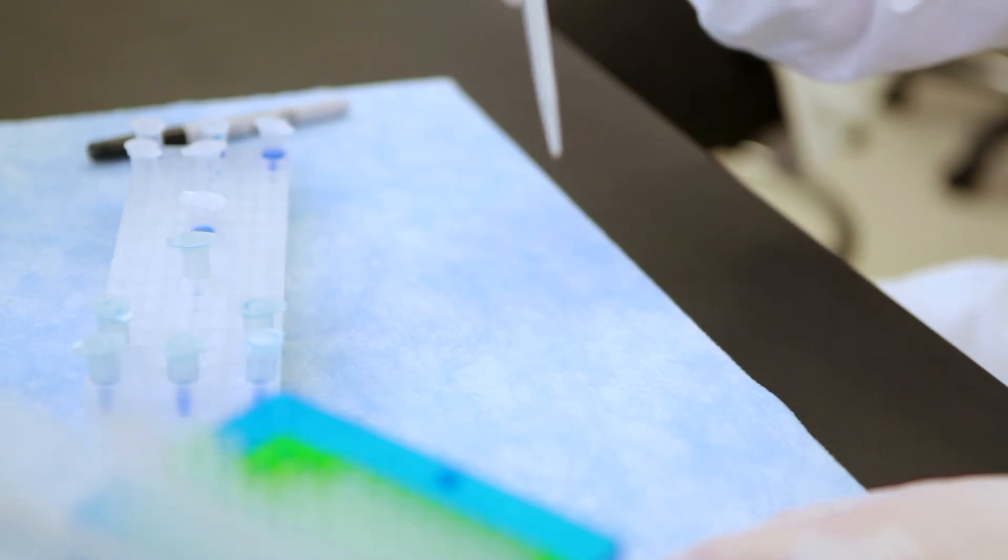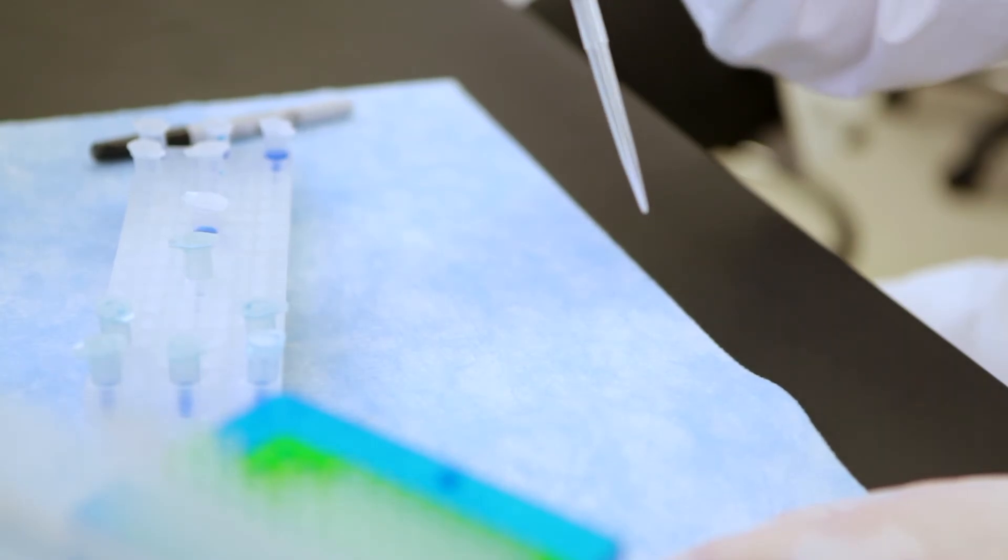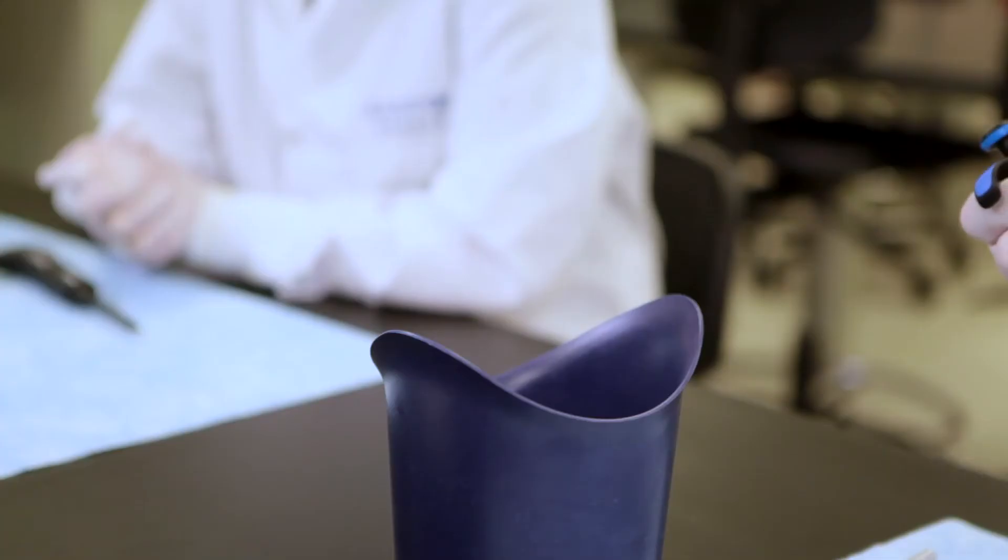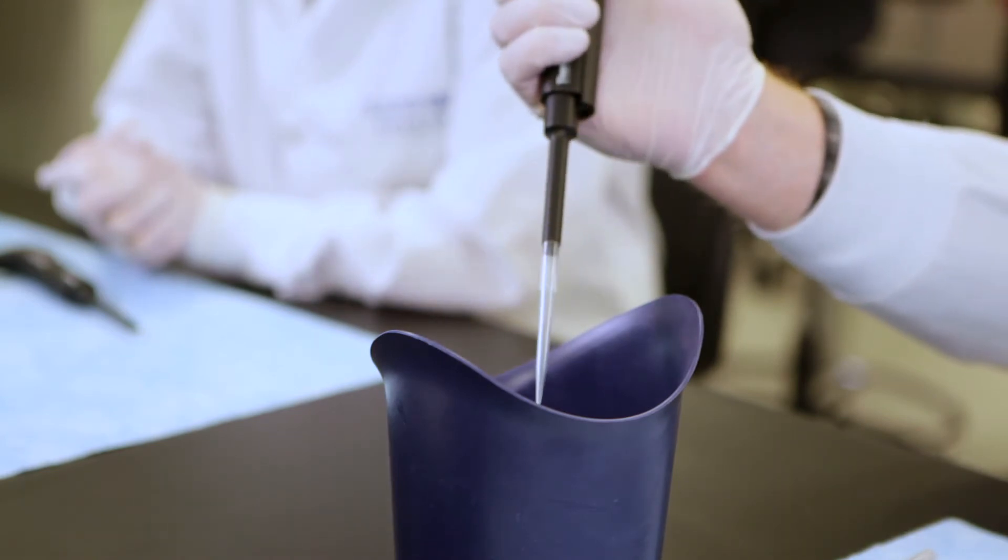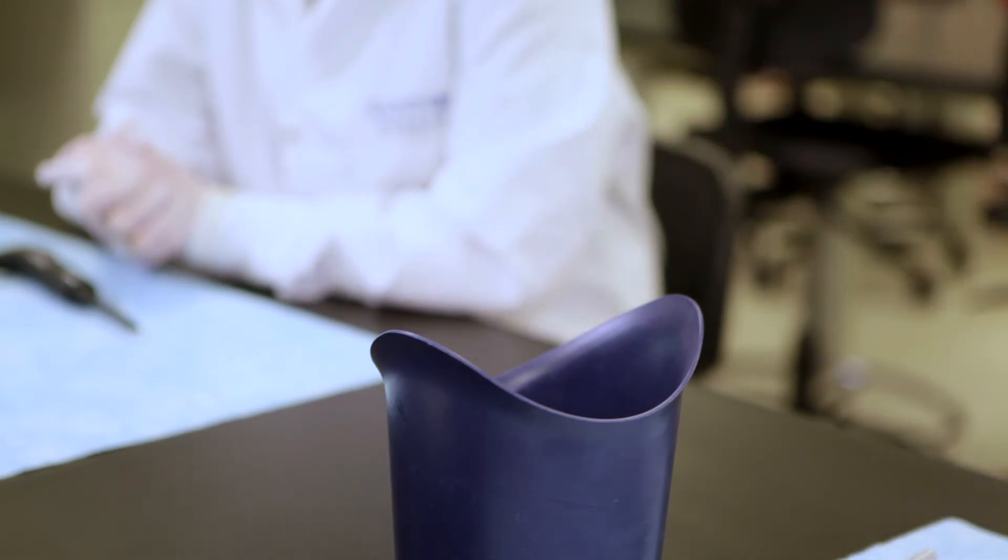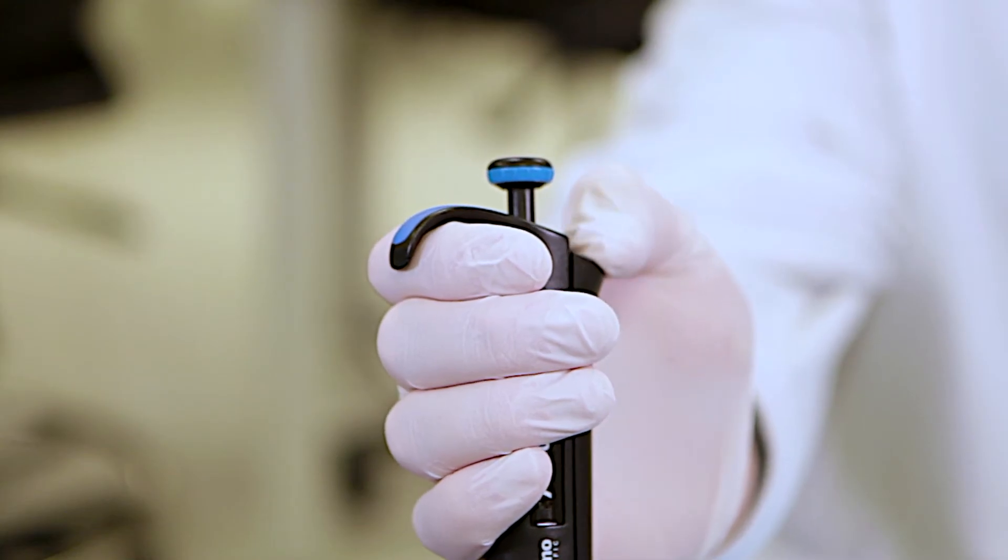Use a new pipette tip with each new liquid. If the tip touches any surface or any liquid other than the one you are pipetting, discard it and get a new one. Once you are finished pipetting, dispose of your tip by aiming the base of the pipette over the waste container and depressing the eject button. This should eject the tip from the pipette into the container.